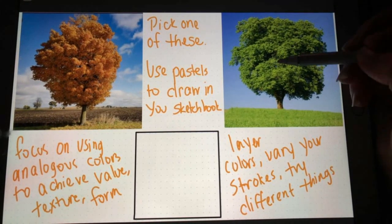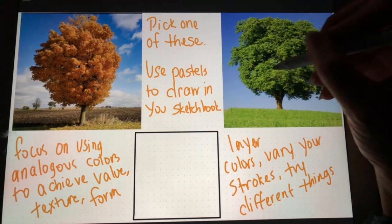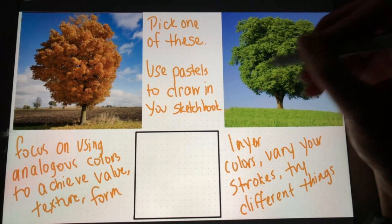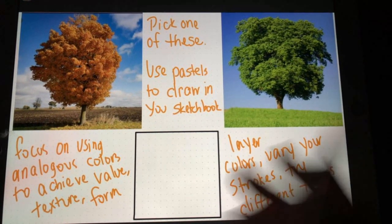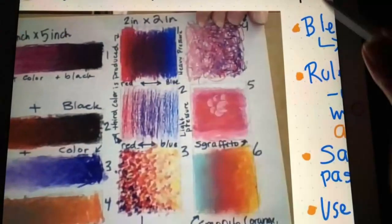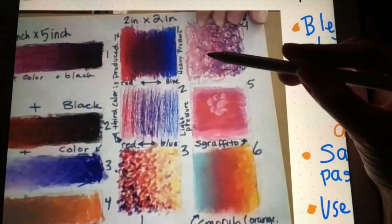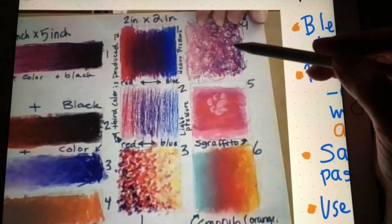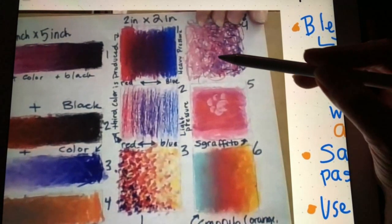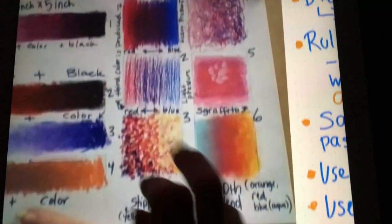When I say vary your strokes — any time your pastel touches the paper and you move it across, that is a stroke. So varying your strokes means try different kinds of lines and layer them to create this kind of tree. Here's an example: this was called scumbling, and there were lots of layered lines. It does end up covering the page below, so you still shouldn't see any page underneath.